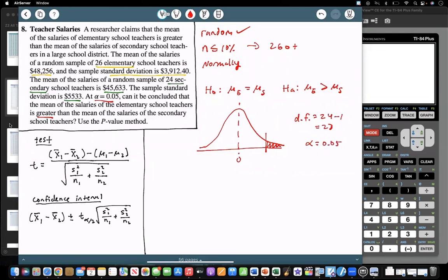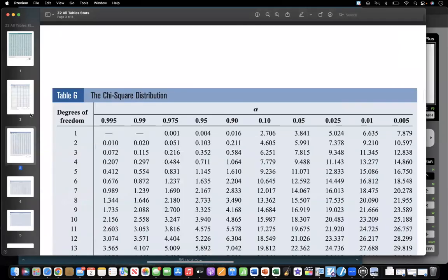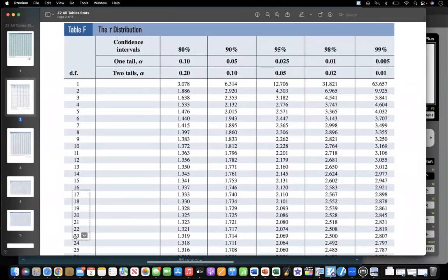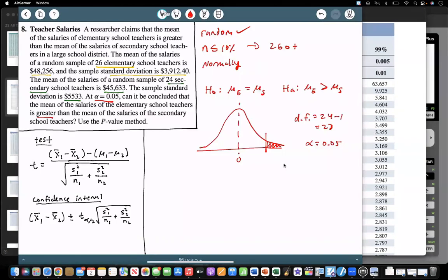So if I go to my table, T distribution, degrees of freedom 23 will be this column here. And then if I go over to one tail, so this top column, 0.05, that's this column here, so one tail 0.05, if I go down to 23, it looks like we have 1.714. So 1.714 will be my critical value.